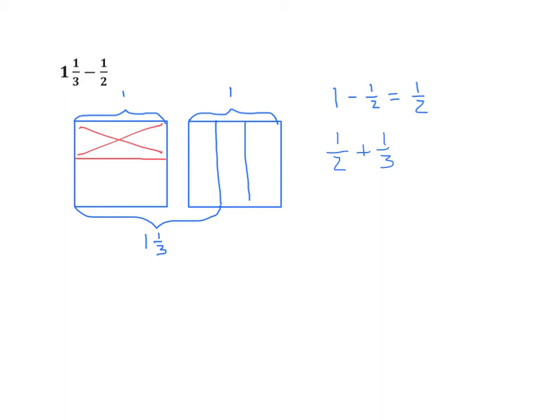Now we have unlike denominators for both of these, and we want to find the common unit. Some of us know how to do that without drawing or working with the model, and some of us don't. So let's partition this to make equal units — we can see now that we have sixths. We can see that 1 half equals 3 sixths, plus 1 third equals 2 sixths. The sum of those two fractions is 5 sixths. So the difference between 1 and 1 third and 1 half is 5 sixths.